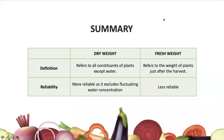In summary, dry weight refers to all the constituents of the plant except water, and is a more reliable option to analyze weight. Fresh weight includes water, is less reliable when trying to judge how plant management or system management is impacting plant performance, but can be useful when measuring yield.